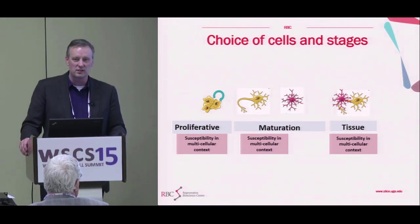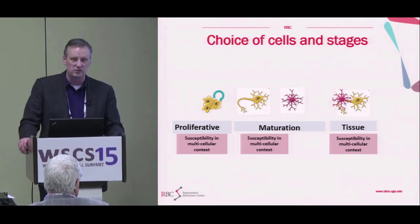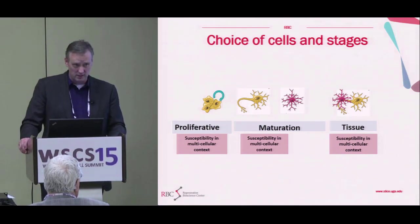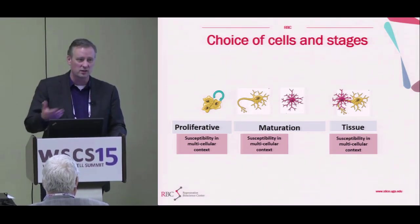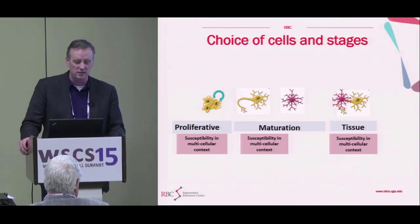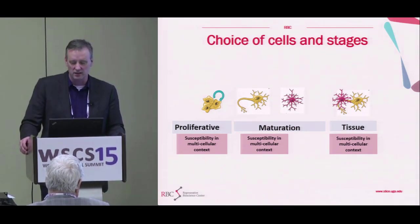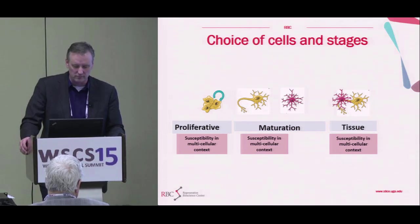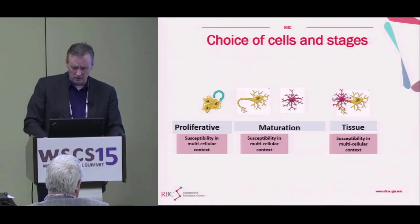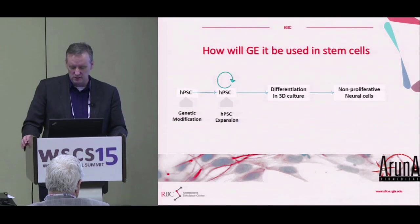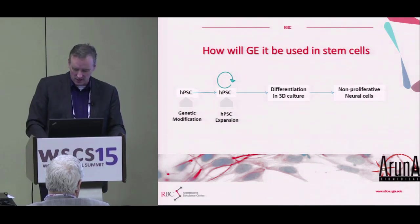The choice of cells is also an important consideration. Are we doing gene editing in stem cells and proliferative cells, differentiated cells, or progenitor cells that are tissue-specific? And eventually, can we do this efficiently in tissues and possibly whole organisms as well? Our own interests have been in how to use gene editing in our cells going forward, particularly in stem cells.